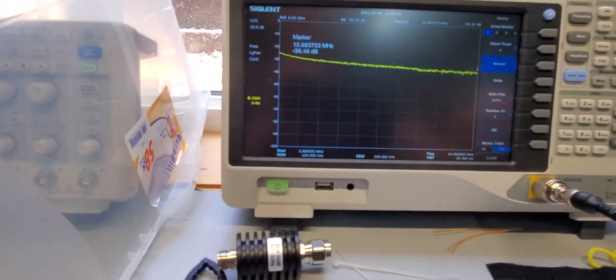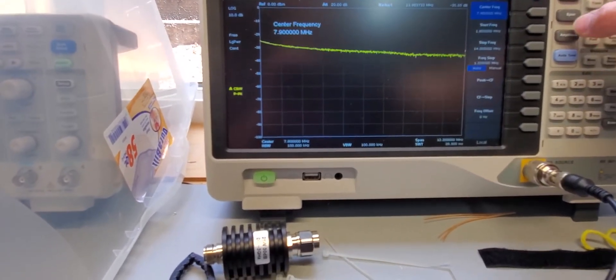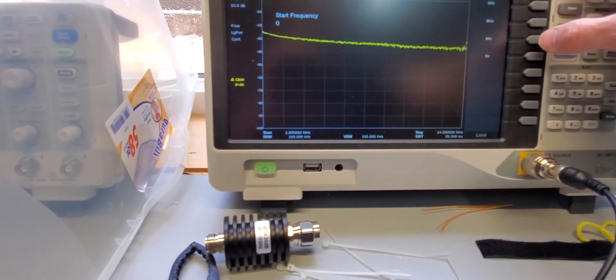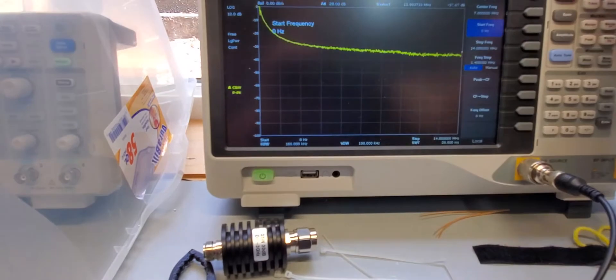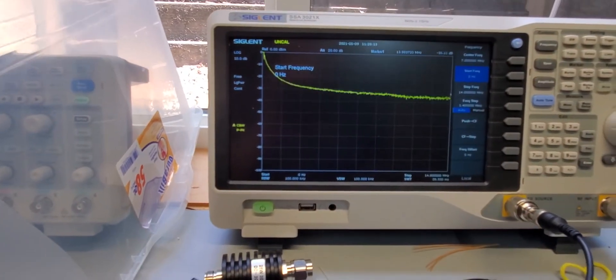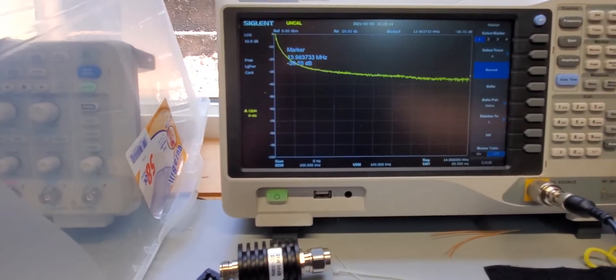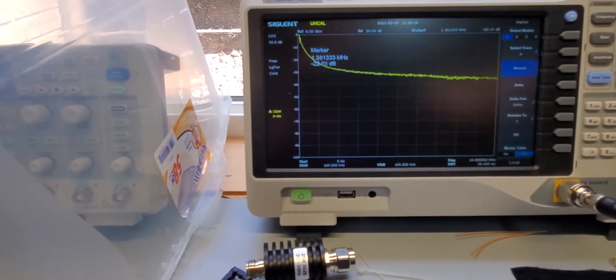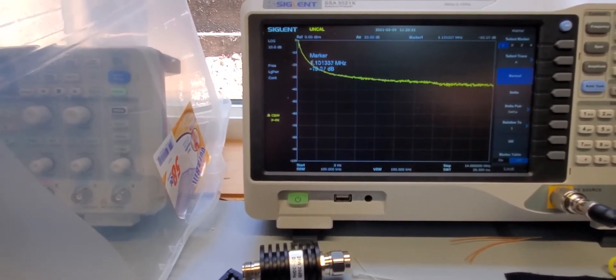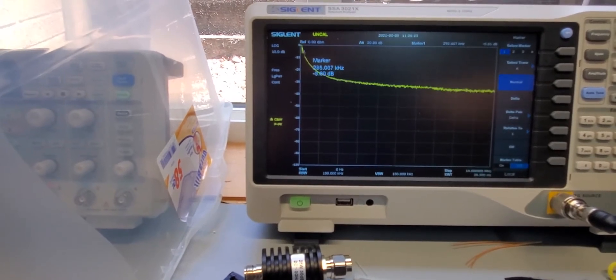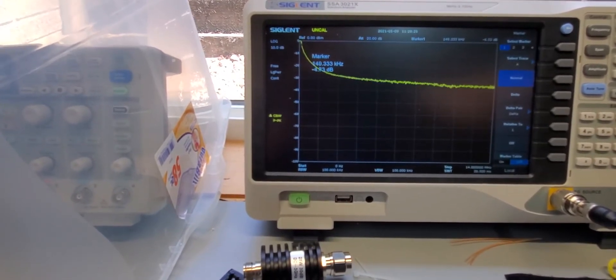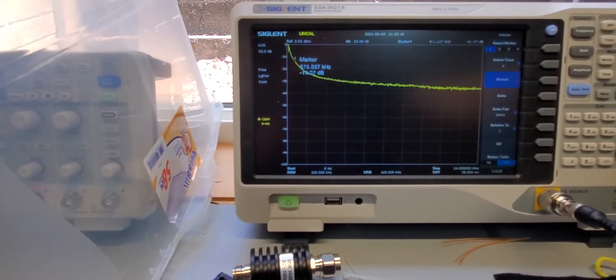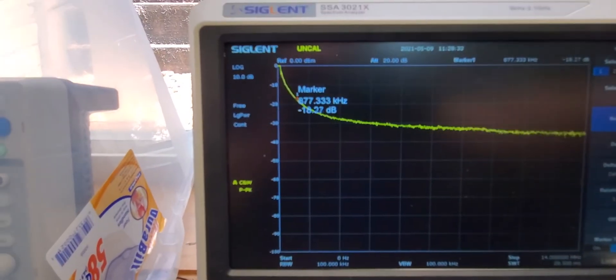If you go ahead and just change the frequency start frequency to zero, we see a little bit more. At 9 kilohertz the spectrum analyzer will stop, but before that you see already here the attenuation isn't there at all.